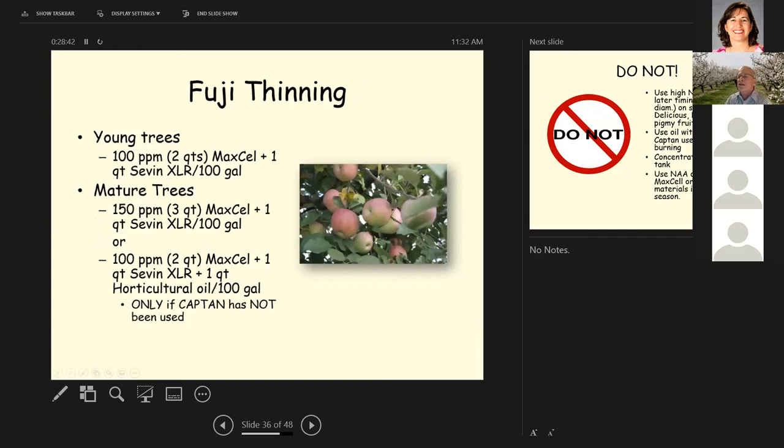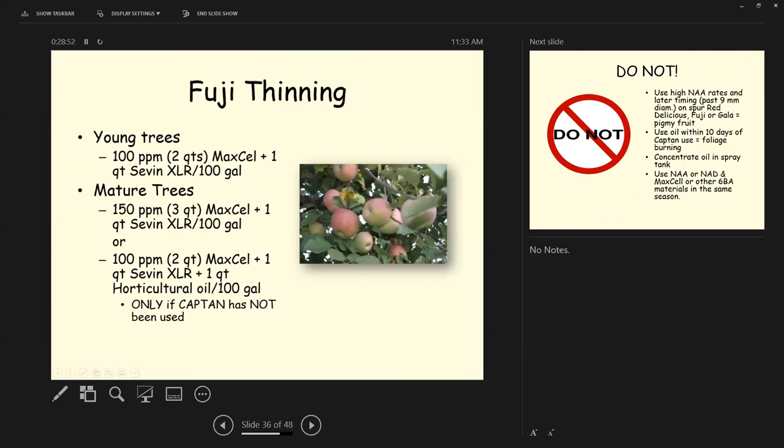So Fuji is a difficult one to thin. It's been pretty tough to thin on young trees on about a hundred parts per million or two quarts of Maxell plus one quart of seven XLR per hundred gallons. On mature trees, you up the rate to about three quarts of Maxell plus one quart of seven XLR per hundred gallons. Or if you really need to thin a lot off, a hundred parts per million of Maxell plus one quart of seven XLR plus a quart of horticultural spray oil, only if you're not using captan.